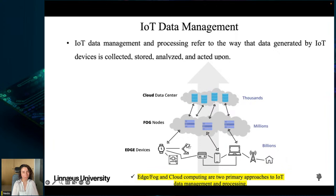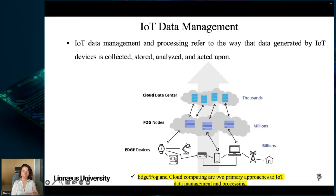IoT data management and processing refer to how data generated by IoT devices is collected, stored, analyzed, and acted upon. Edge computing and cloud computing are two primary approaches. Edge computing processes data locally on the IoT device or at the network edge, while cloud-based solutions transmit data to a remote cloud server. The choice depends on requirements such as response time, scalability, and cost effectiveness.